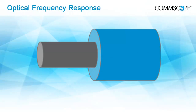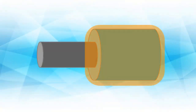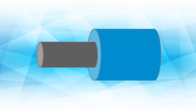A glass fiber consists of a core, where most of the light is transmitted, and cladding, which is a different glass composition surrounding the core. Both core and cladding have an effect on signal propagation in fiber, with each having distinctive refractive indices, which are measures of the tendency of light to bend as it encounters a boundary.